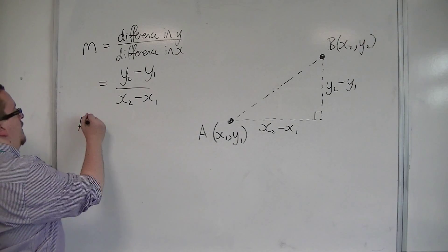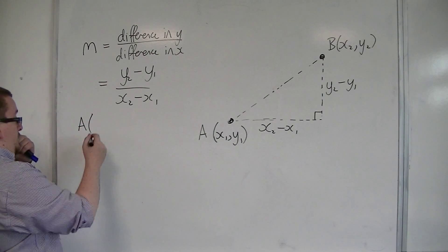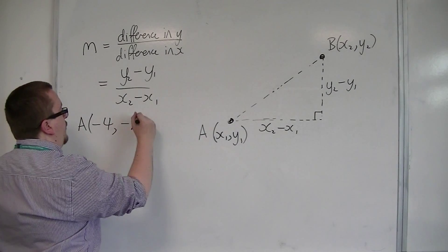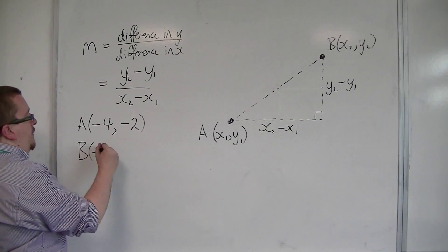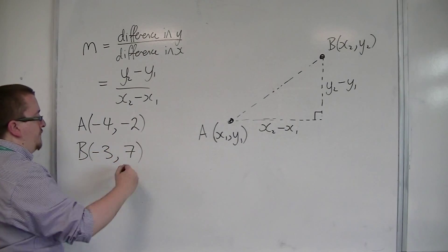Let's say we've got the coordinates of A minus 4, minus 2, and the coordinates of B are minus 3, 7.